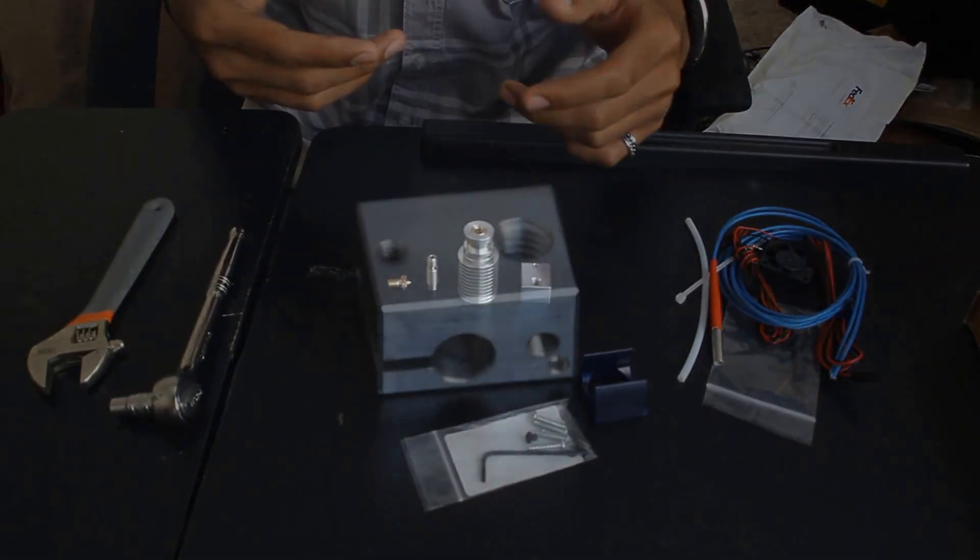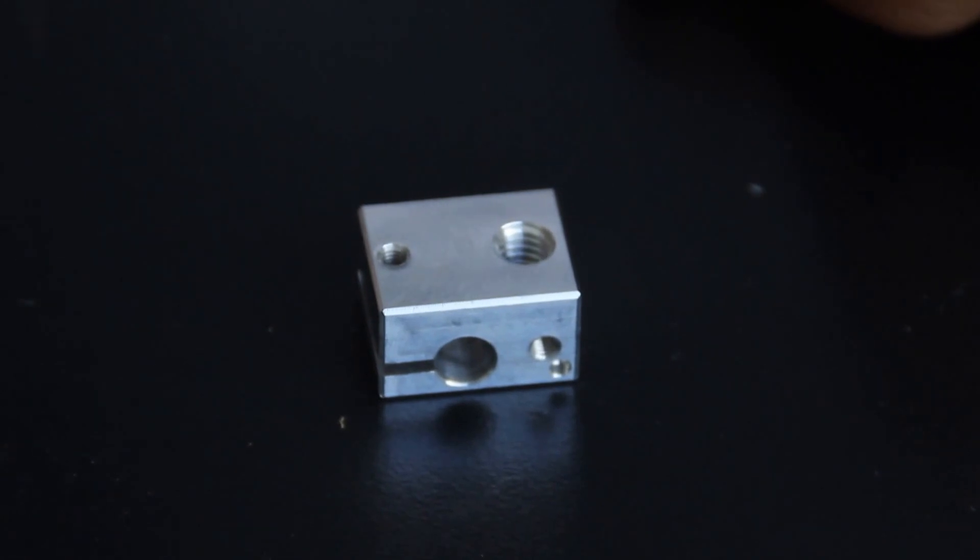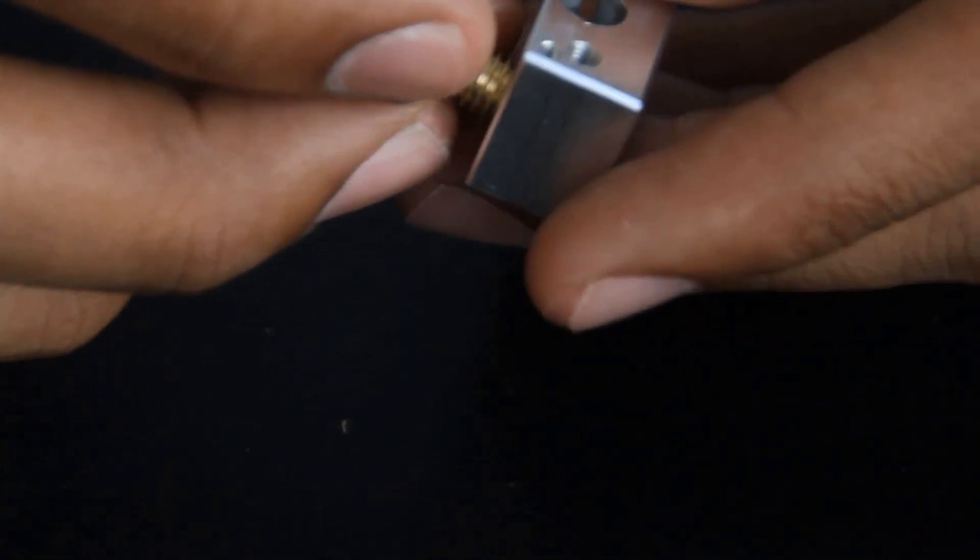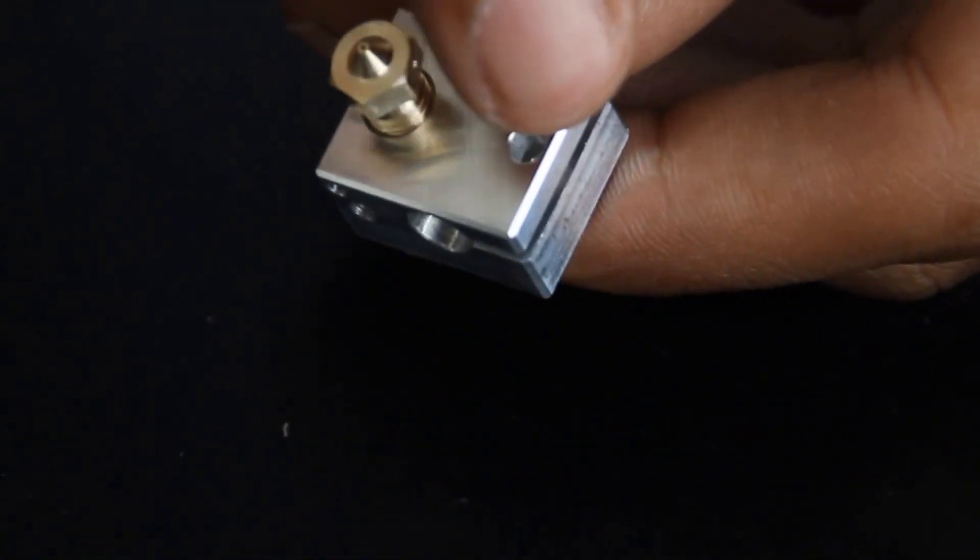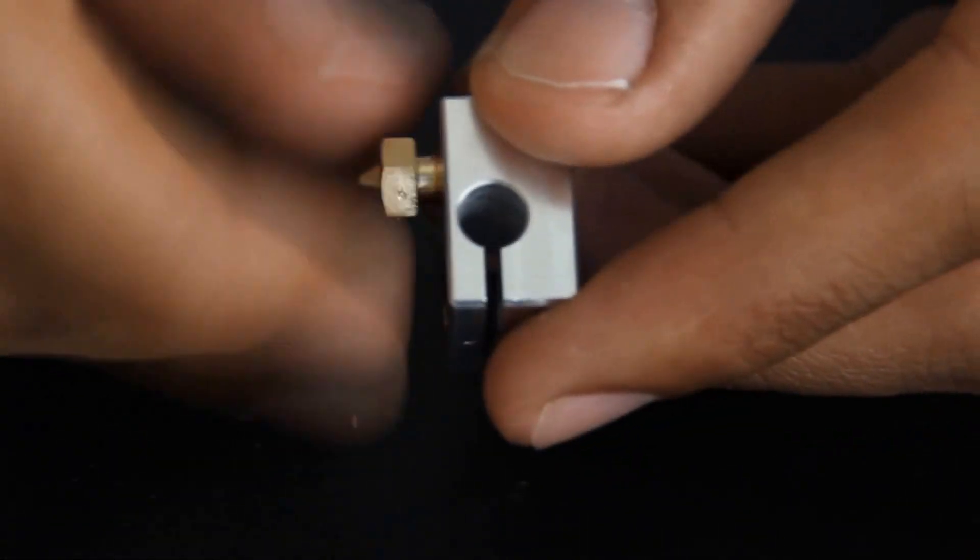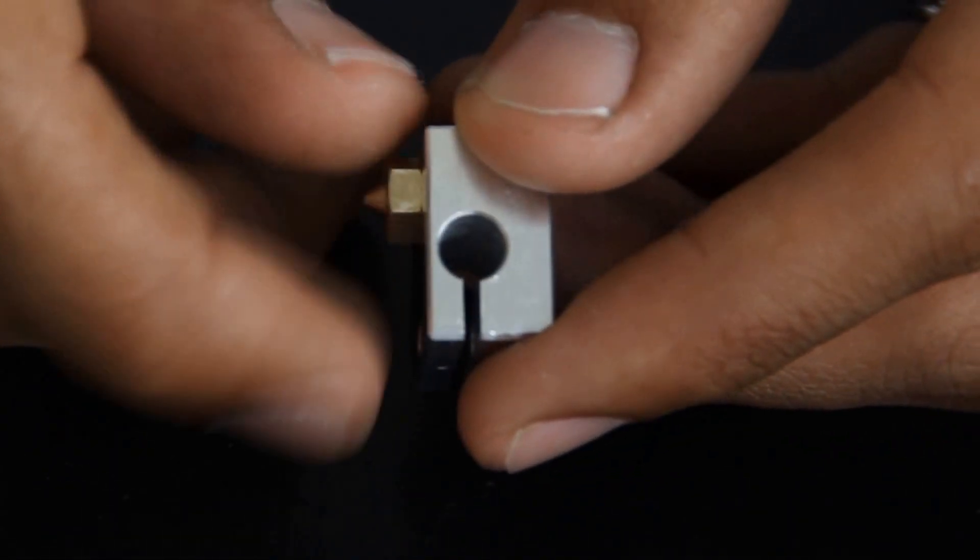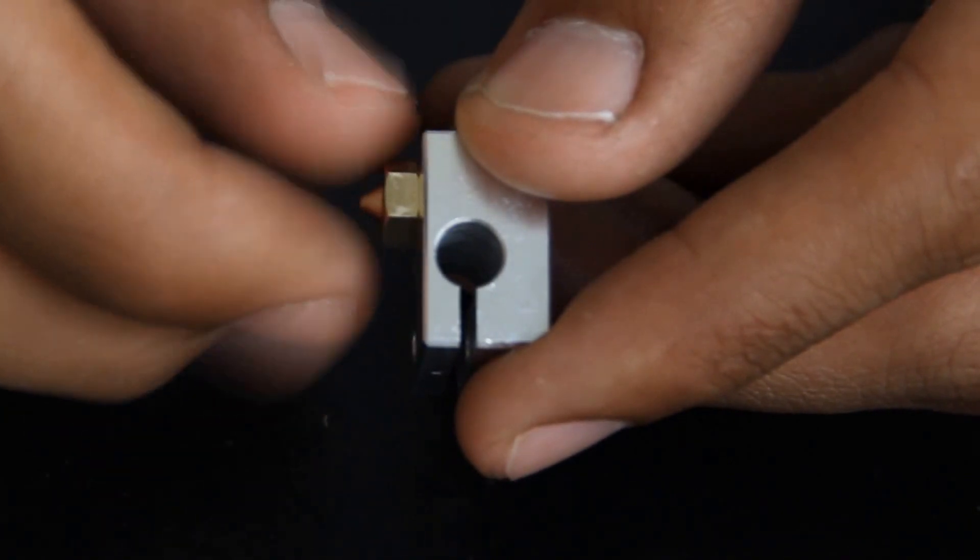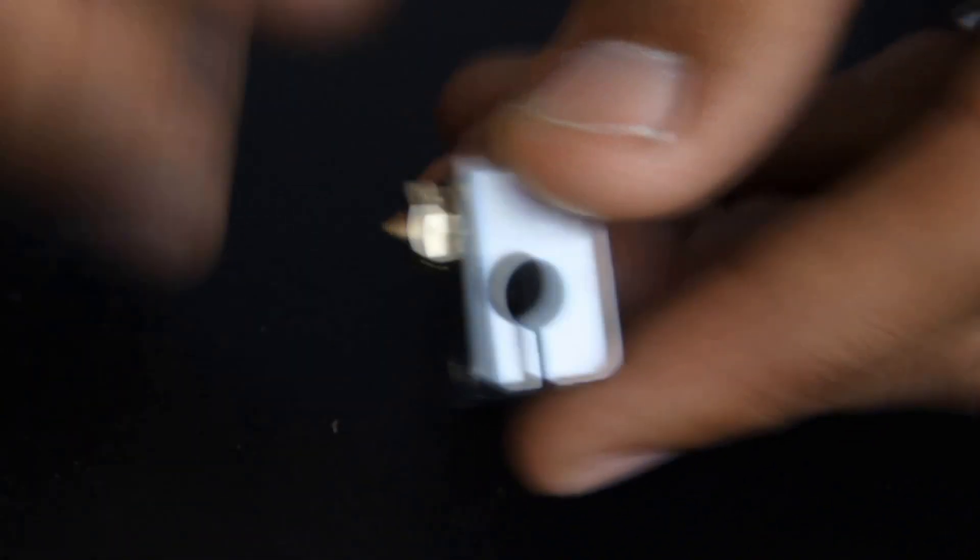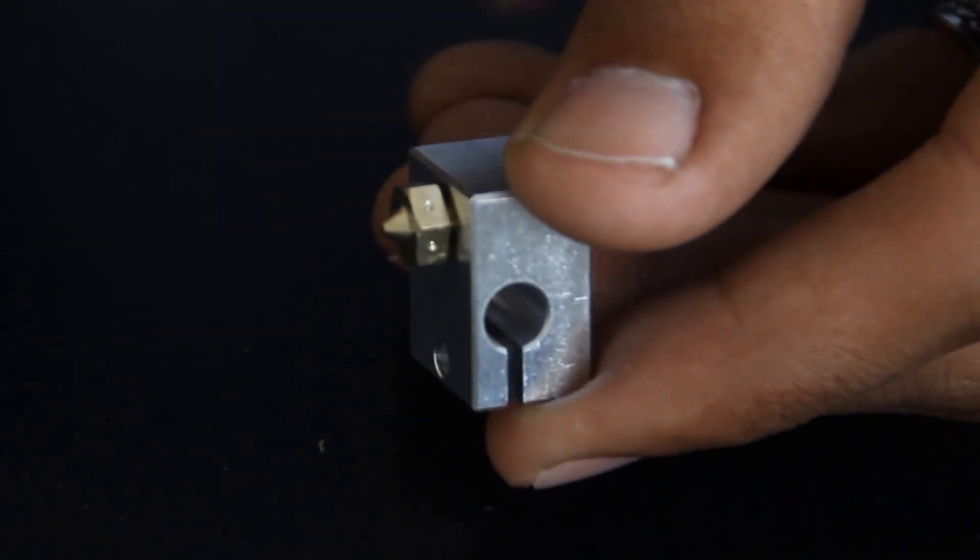These are all pretty much just going to fit together. First, you're going to take the heater block and the 0.4mm nozzle and screw that into the heater block. Tighten it to the bottom, which is located with the screw hole right here. When you have it just finger tightened, you're going to go about a quarter turn out. This is going to leave a space here so you can tighten it later on.